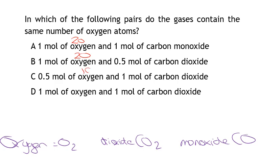So one mole of oxygen has two oxygen atoms. Half a mole of oxygen has one oxygen. One mole of carbon dioxide has two oxygens, so half a mole is going to have one oxygen, one mole here is going to have two oxygens. Carbon monoxide, one mole has one oxygen. If we look, D is where we have two oxygen and two oxygen.